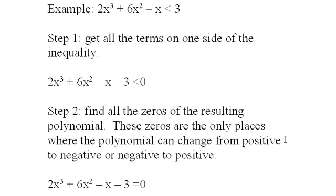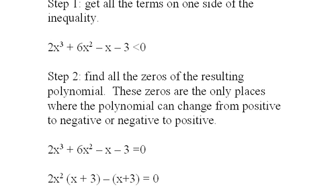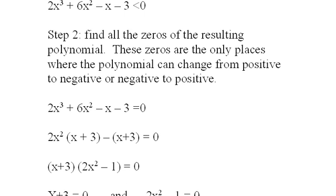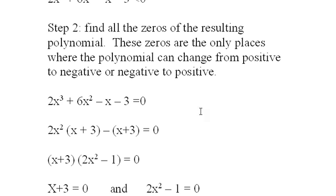Step 2 is to find all zeros of the resulting polynomial — that means this polynomial right here. There are many ways to do this: I could pop it into a calculator, I could use rational root techniques. But fortunately this one factors nicely.